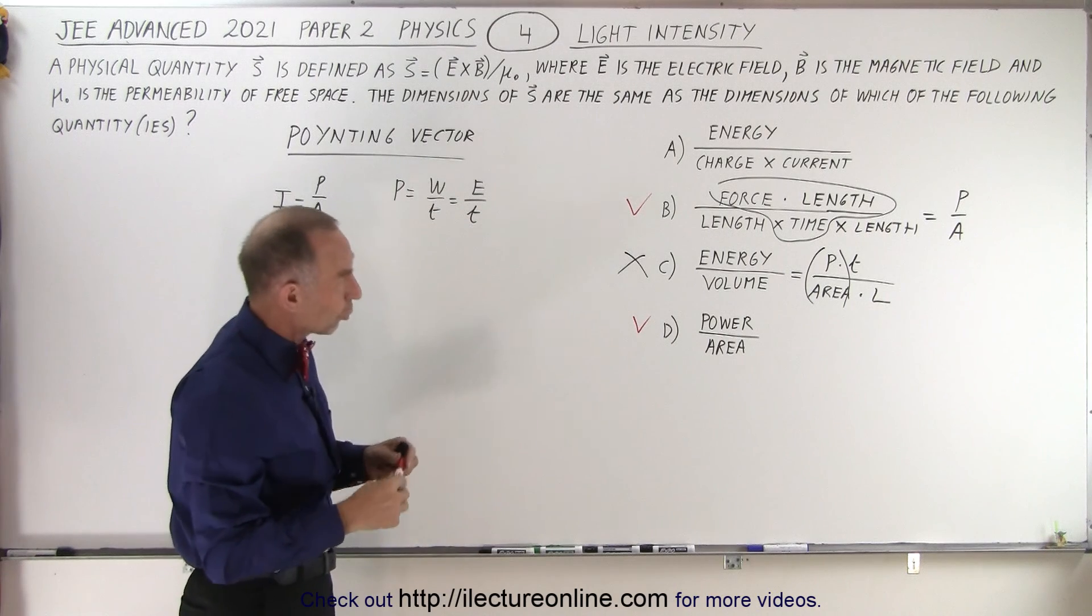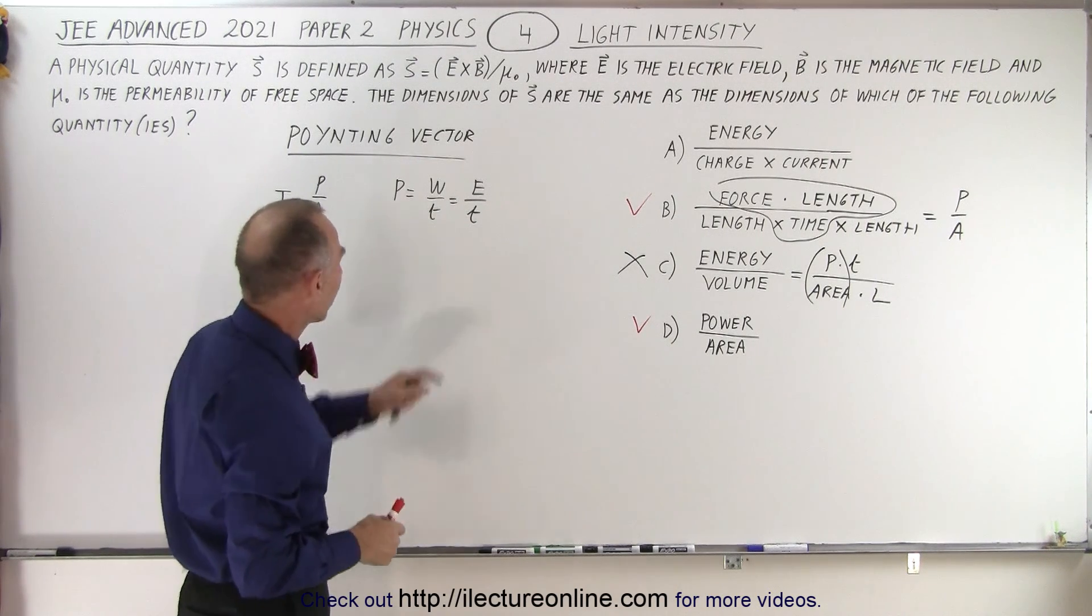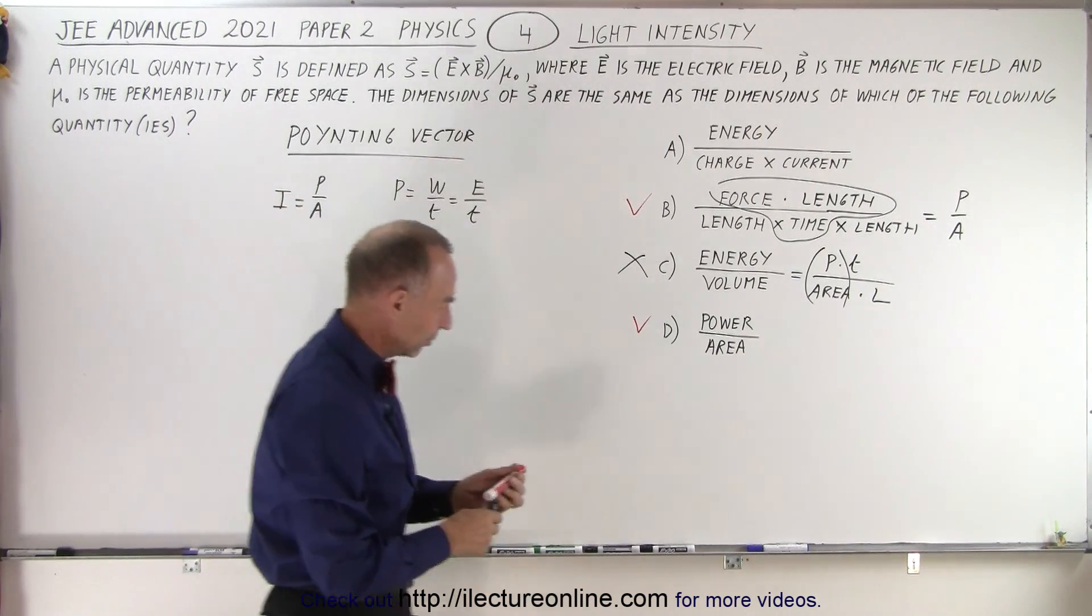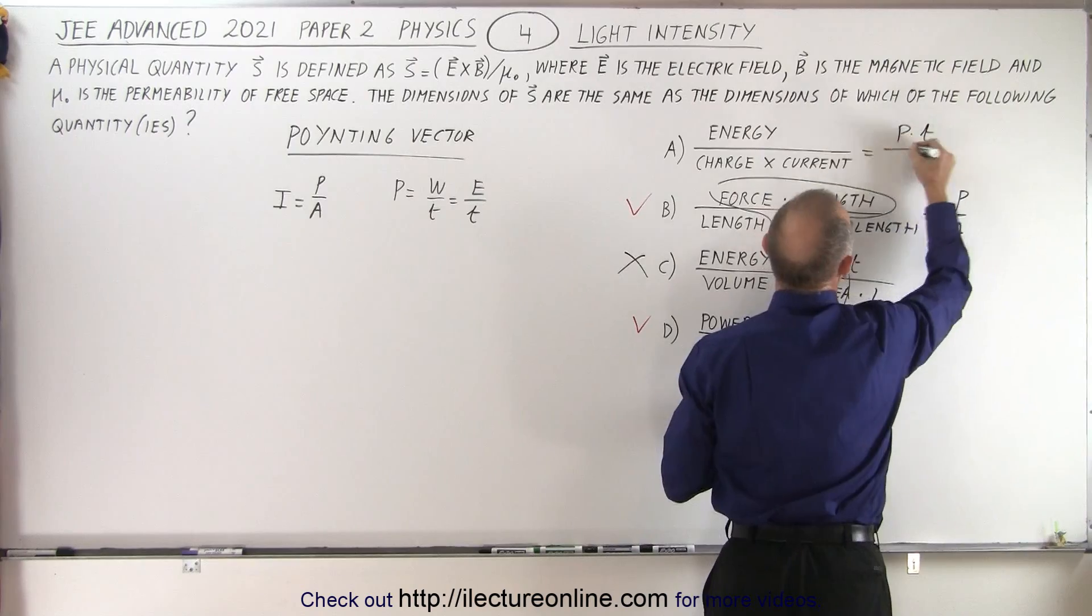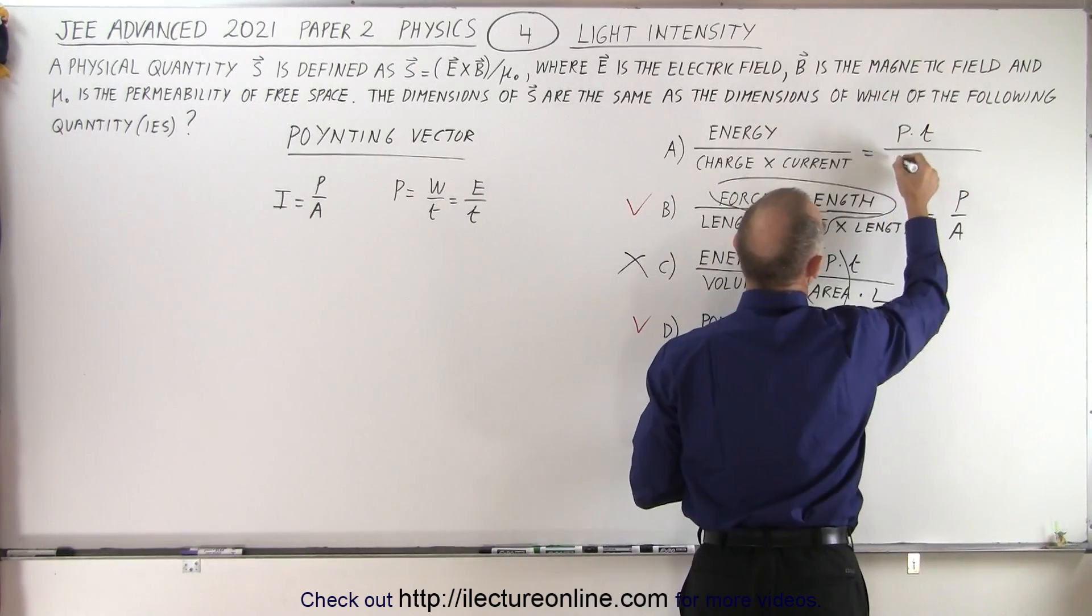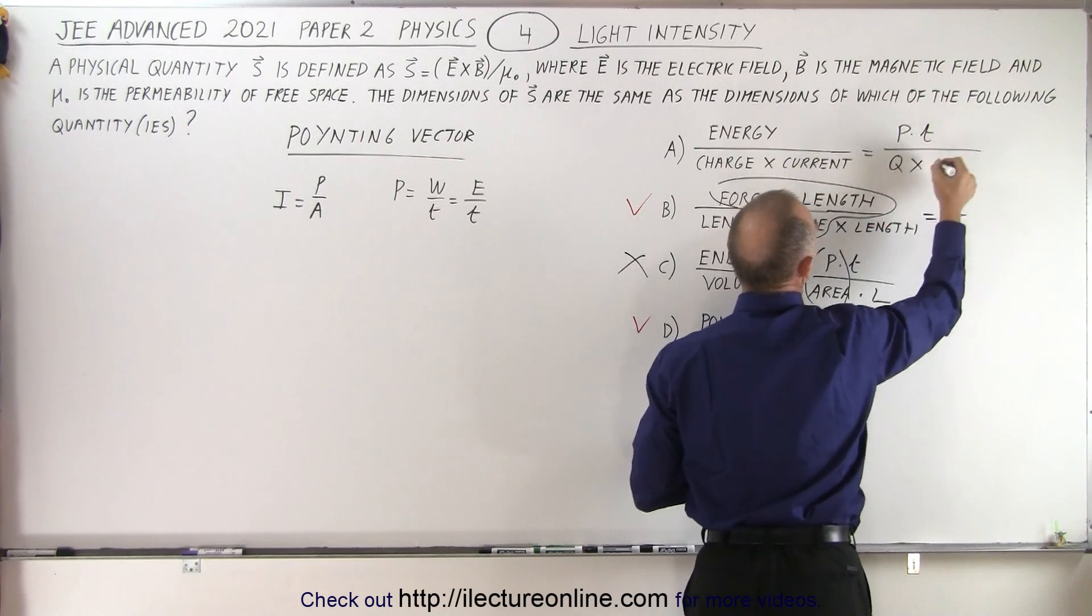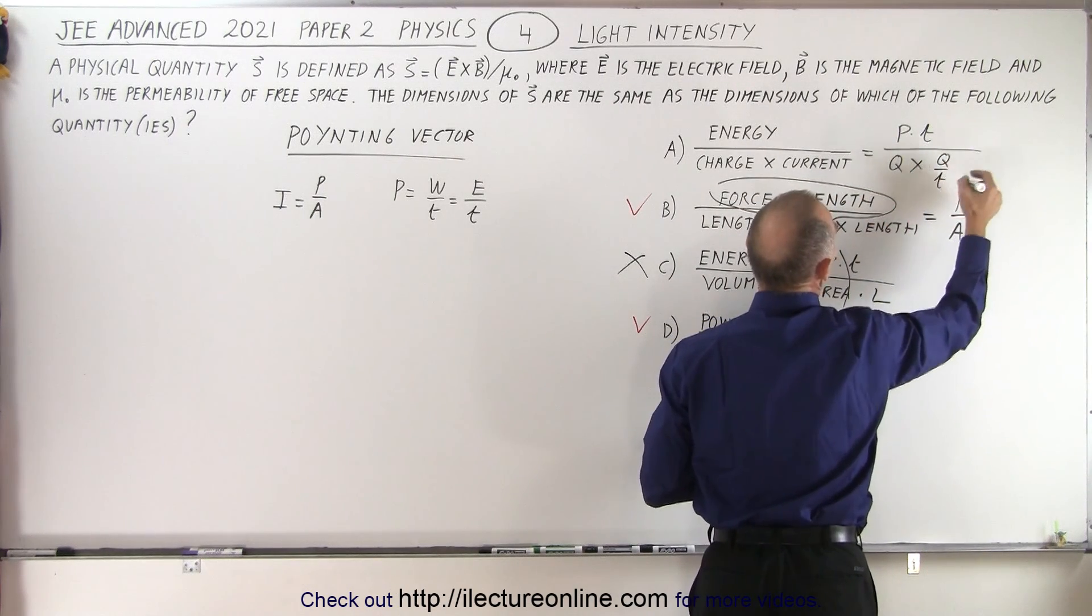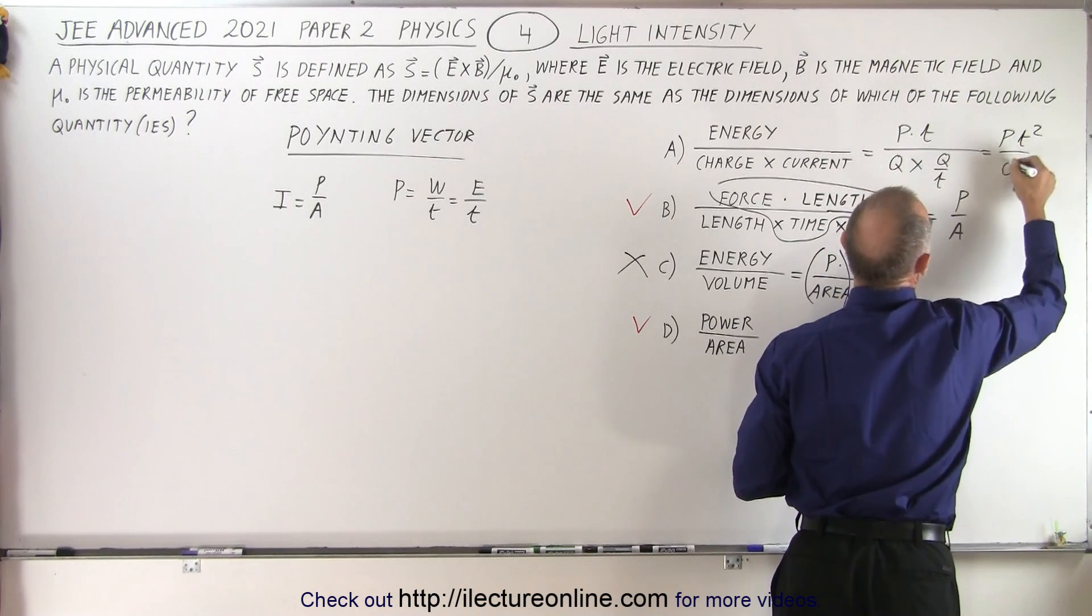How about energy, charge, and current? Energy would be power times time. So let's write that as power times time. And in the denominator, we have charge, which is Q, and current, which is Q over time.